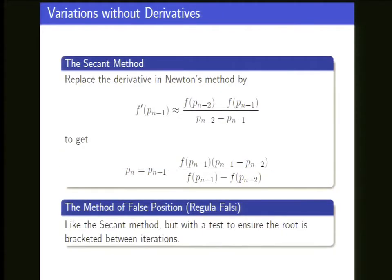Before we continue, we talked about the secant method, addressing one issue with Newton: what if you don't have the derivative? Clearly you can't do Newton because there's an F prime in the denominator. The idea is that if you have two different initial values P0 and P1, you can draw a straight line between those F values — that line approximates the derivative. The final formula is the secant method, and it's not quite as good as Newton, but worth doing if you don't have the derivative.